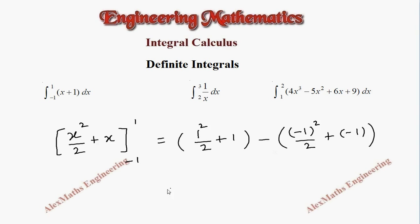So now it is going to be 1/2 + 1, then minus: 1 square is 1, so this is 1/2, and there's a minus outside, so -1/2, and this is -1. When I take this minus inside it will become +1. Then finally we can cancel 1/2 and -1/2, so the answer is 2.